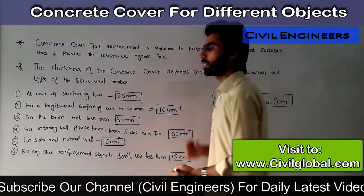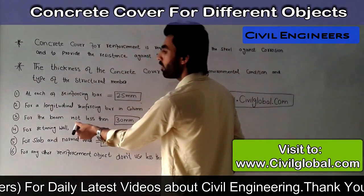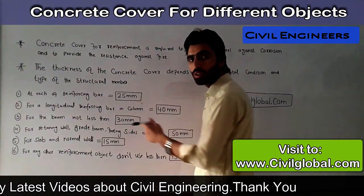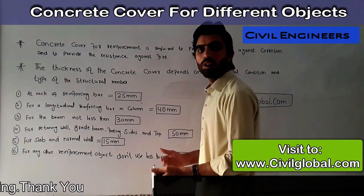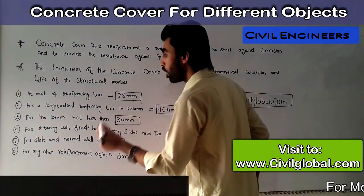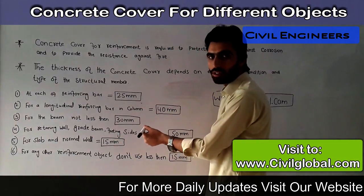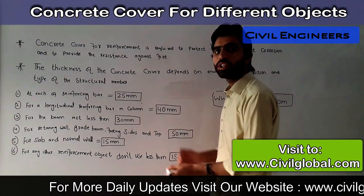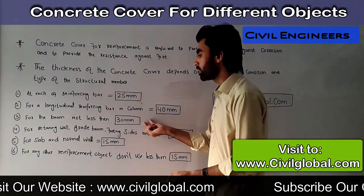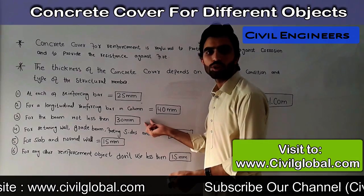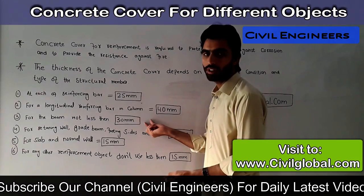The third one is for the beam — the horizontal structural member. For a beam, do not take less than 30 millimeters. You can take more than 30 millimeters depending on the situation or condition of the structural member, but the minimum is 30 millimeters.